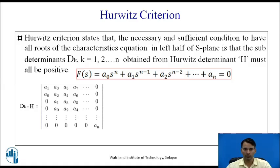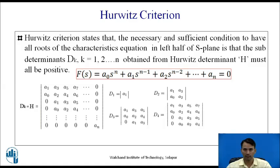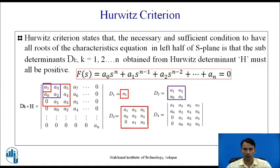To find the different determinants of Hurwitz Criteria: d1 is the 1×1 matrix from the Hurwitz table, so d1 equals a1. d2 is the 2×2 matrix with elements a1, a3, a0, a2. d3 is the 3×3 matrix from the Hurwitz table. d4 is the 4×4 matrix from the Hurwitz table, and so on.